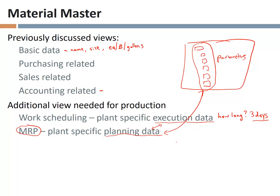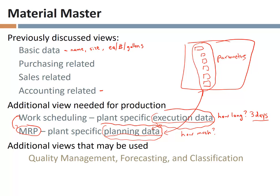Notice the important distinction here: the work scheduling view focuses on execution — how long it's going to take us to make the item — whereas MRP focuses on the planning process in getting ready to engage in production, which would include acquiring resources and doing the calculation of how much we actually intend to make. We're going to see concepts like safety stock and other things we can set for particular materials.